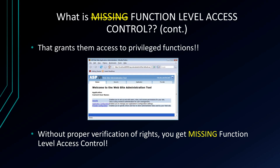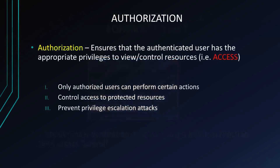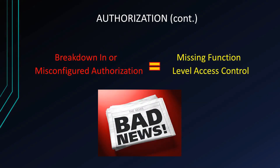It comes down to verification and authorization. Authorization ensures that the authenticated user has the appropriate privileges to view and control resources. Only authorized users can perform certain actions, control access to protected resources and services, and prevent privilege escalation attacks. Essentially, a breakdown or misconfiguration in authorization equals Missing Function Level Access Control — pretty simple, but bad news.